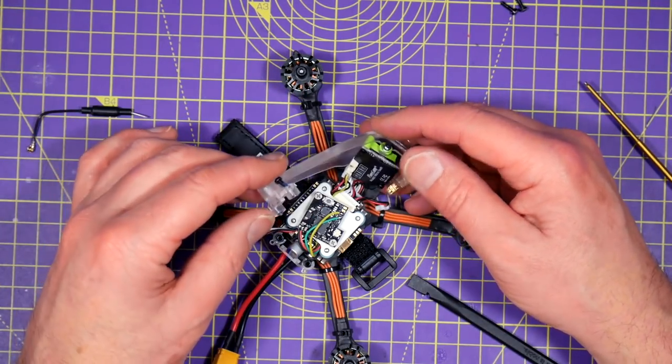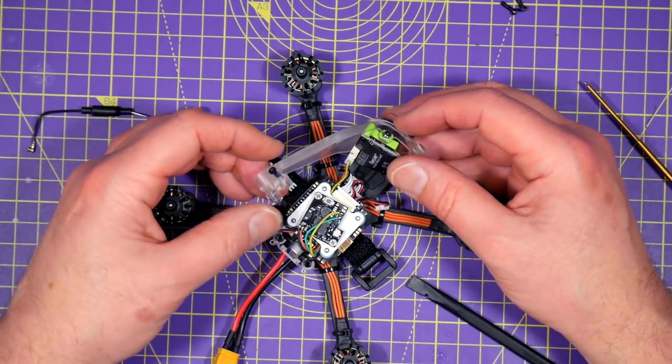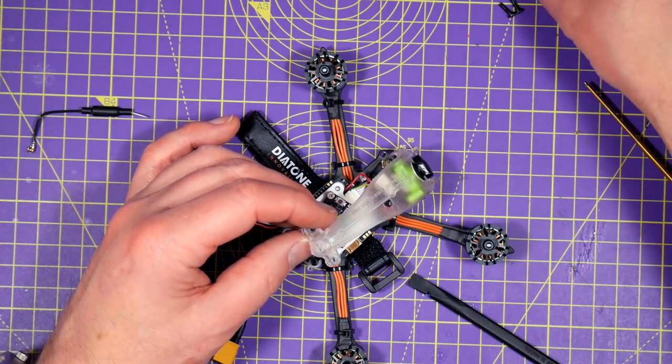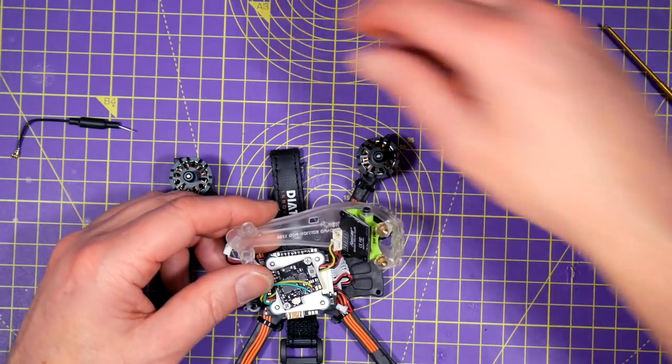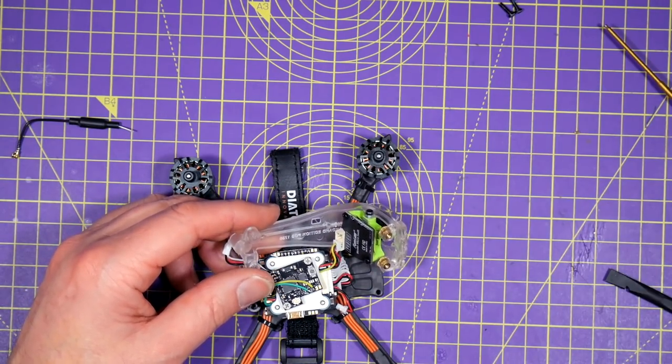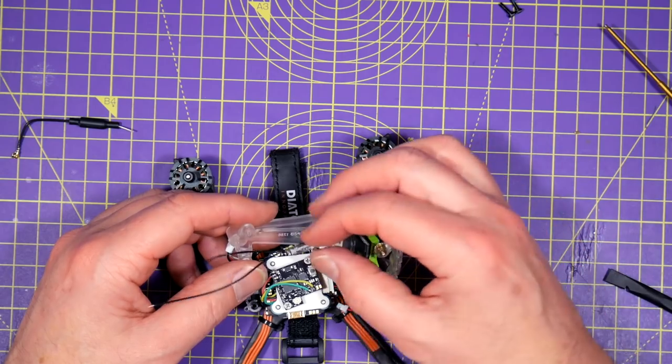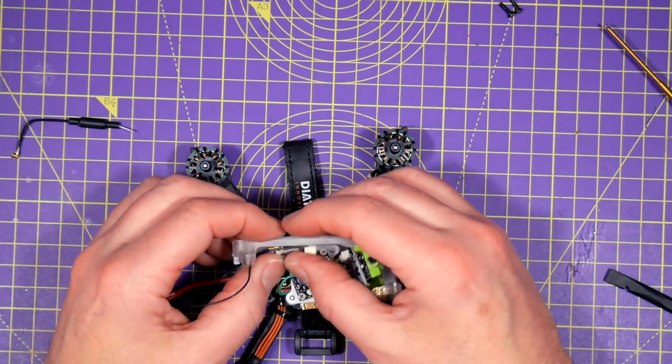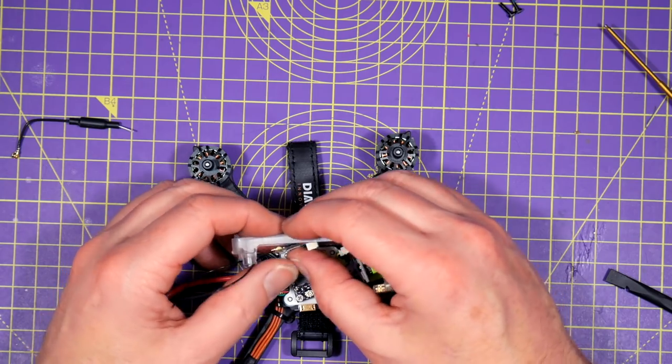Once that's done you can unclip the connector on the camera and lift the whole canopy away to give you a bit of space. I'll be using an FR Sky XM Plus receiver and there's just enough room for it to fit between the canopy and the VTX with the antennas coming out the back.